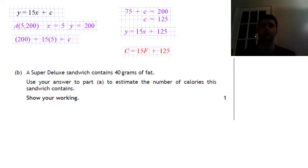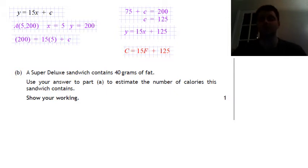And it's calories equals 15 times fat, because calories were on the y axis, the fat was on the x axis. So then it's just 15F plus 125. So that's quite a lot of work there to get the full three marks. But it's generally relatively straightforward.